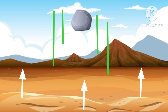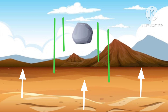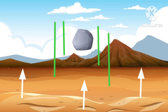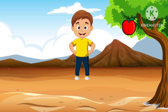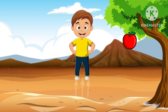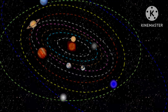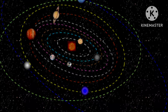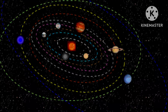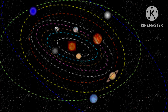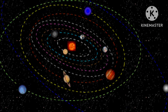Gravity is an invisible force that pulls objects towards each other. Earth's gravity is what keeps you on the ground and what makes things fall. This force of gravity also keeps all of the planets in orbit around the sun.